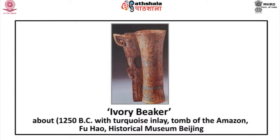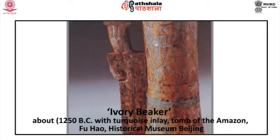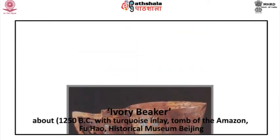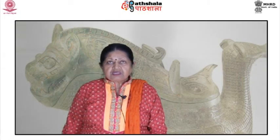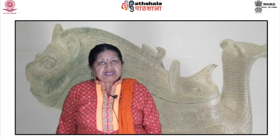The grave goods were placed either in the intermediate space between the inner and outer coffins — as in grave 18 in Anyang — or on the stamped earth podium on which the outer coffin rested; only a few objects have been found in the inner coffin. An ivory beaker, dated to about 1250 BCE, with turquoise inlay, from the tomb of Fu Hao, is now in the Historical Museum, Beijing. Probably this was an item for the queen's personal use — this beaker is etched with geometric decoration and turquoise inlay.